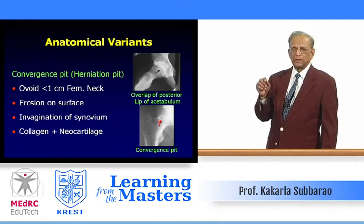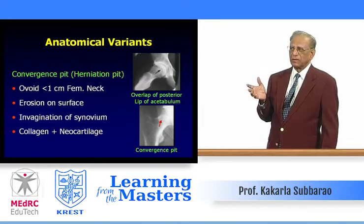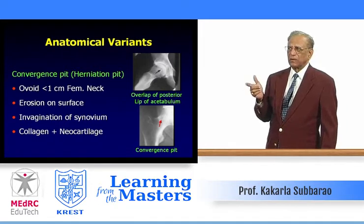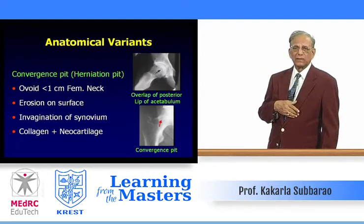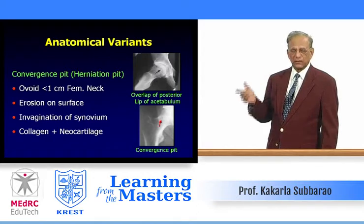Another example: somebody suggested it must be an osteoid osteoma because there is lucency with surrounding sclerosis. But osteoid osteoma does not typically occur in a 55-year-old male. Please note the patient's age and clinical condition before making a definitive diagnosis.